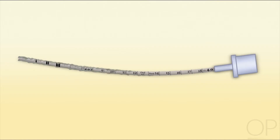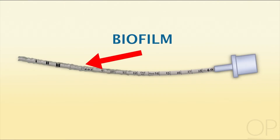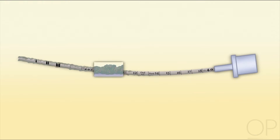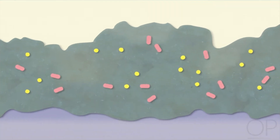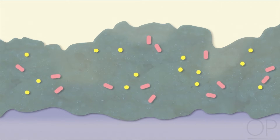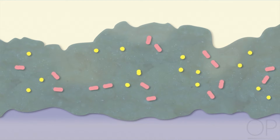Biofilm is a thin mucus film that develops on the inside and outside of every catheter inserted into the body. Bacteria colonize the surfaces of these catheters and secrete a mucus film, which can protect the bacteria from antibiotics. Bacterial multiplication takes place under the biofilm. The best prevention is to remove endotracheal tubes as soon as possible.